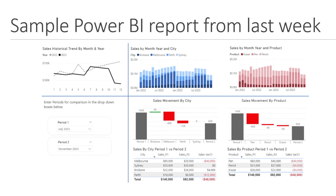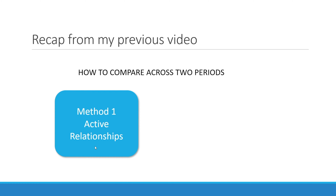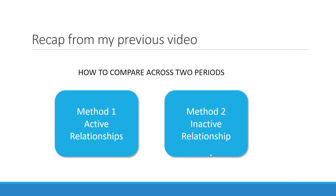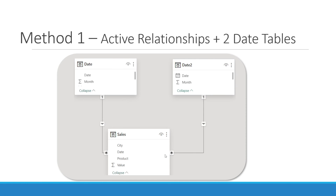How do we create this? As a recap from my previous video, I mentioned that there are two methods. Method number one is by creating an active relationship in your data model, and method number two is by creating an inactive relationship in the data model. In my previous tutorial I have shown you in depth how to use method one, whereby we created two date tables and linked them up into our fact table using active relationship.